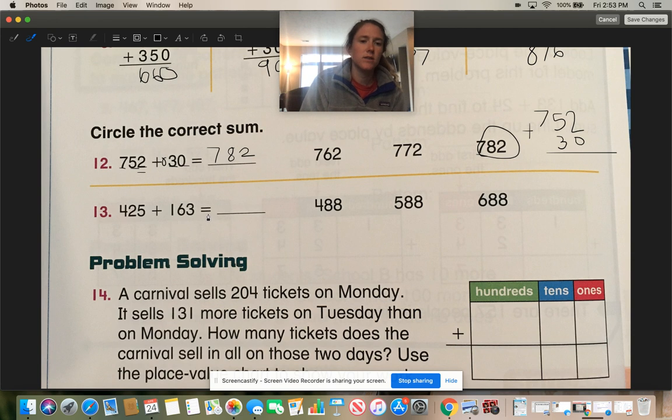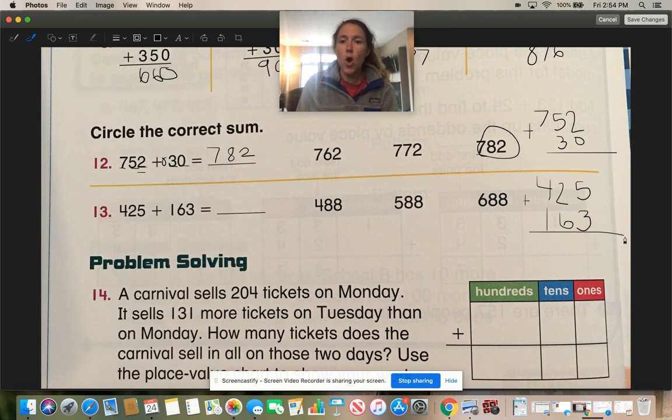Now let's go on to the next one. 425 plus 163. Let's write that one up and down together. 425 plus 163 equals... Okay, we always, always start in our ones place. That's right. 5 plus 3 is 8. 2 plus 6 is 8. And 4 plus 1 is 5. 588.